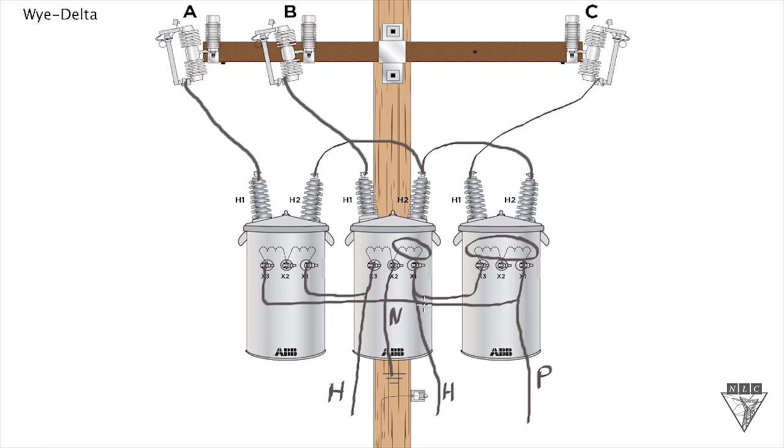One of the advantages of a system like this, a Y-delta, is you can use on the primary side it can be used in a three wire or four wire system. So like a delta or an ungrounded Y three wire system, or you can utilize it on a grounded Y system where you have four wires.